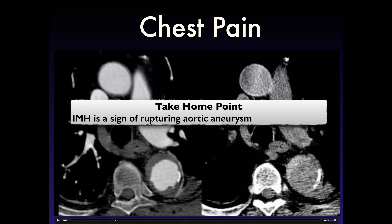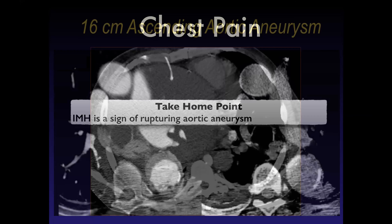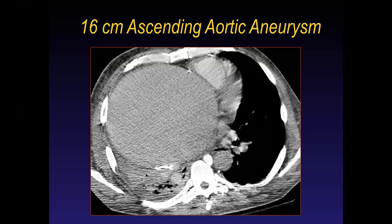IMH is a sign of rupturing aortic aneurysm. Here is the biggest thoracic aortic aneurysm I have ever seen — 16 centimeters of ascending aorta, completely crushing and collapsing the superior vena cava and collapsing the right lung. But there is no IMH, no blood. This is not rupturing — it is a stable lesion. This patient was admitted and then operated on electively several days later.